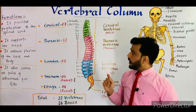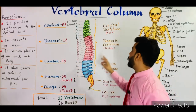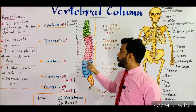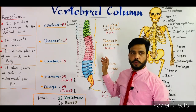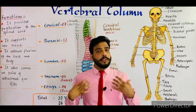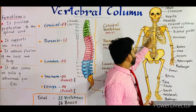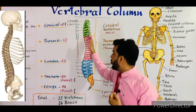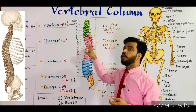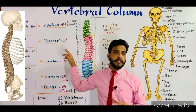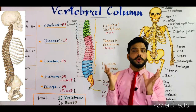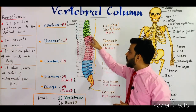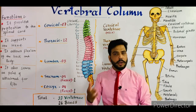The next vertebrae are the thoracic vertebrae, which form the thorax. There are 12 thoracic vertebrae in total, named T1 through T12. An important point: our thorax consists of ribs, as visible in the diagram. All 12 ribs are attached at the back to these thoracic vertebrae, so the ribs are attached to the thoracic vertebrae forming the human thorax or rib cage. The curve formed in this region is known as the thoracic curvature.